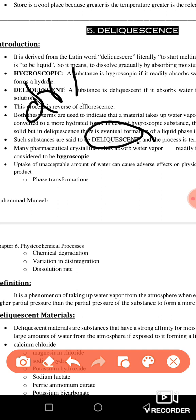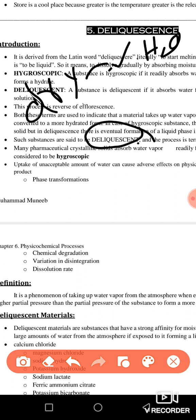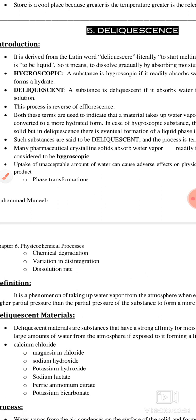A deliquescent substance absorbs moisture and converts into a solution. There is also a misconception about dry substances — people wrongly consider that dry means having no water, but that is incorrect. A dry substance contains some amount of water vapors. For example, a dry vegetable drug contains 12 percent moisture, so dry substances can still contain water.